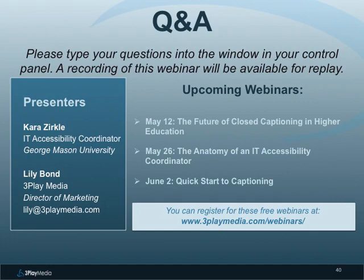We're going to move on to Q&A. I just wanted to mention a few upcoming webinars: in May, we have 'The Future of Closed Captioning in Higher Education,' and then 'The Anatomy of an IT Accessibility Coordinator,' which Kara will be presenting again. Kara, I'm going to start with you — there are a lot of questions about the funding for GMU's captioning. Did the funding come out of one central account or were there multiple accounts, and how did you handle billing? We put in a proposal to our higher-ups and received that as an addition to our budget, which allowed us to charge for captioning. We exceeded that budget every single year, and they finally put us into overhead funding. There are no multiple budgets — the only multiple is the multiple vendors we use.